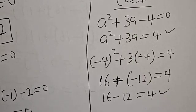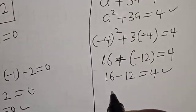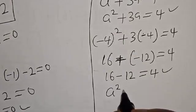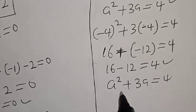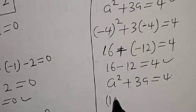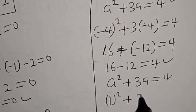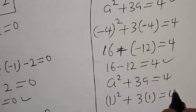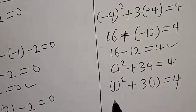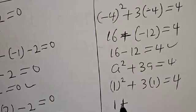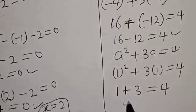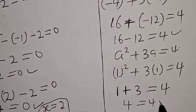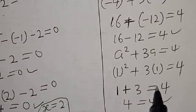Let's check at a equals 1. We have a squared plus 3a equals 4. At a equals 1: 1 squared plus 3 times 1 equals 1 plus 3 equals 4. We satisfy the given equation at a equals 1.